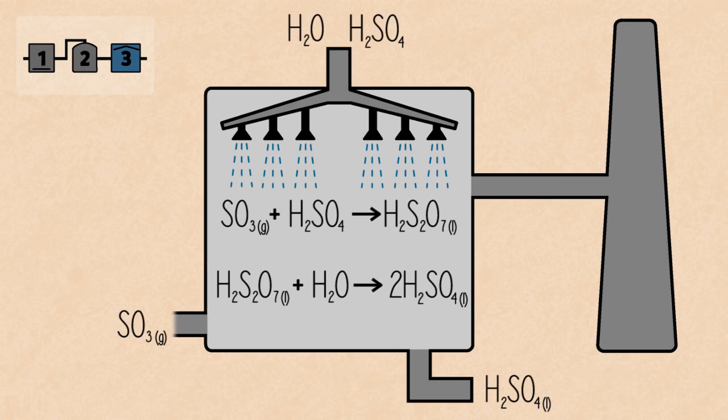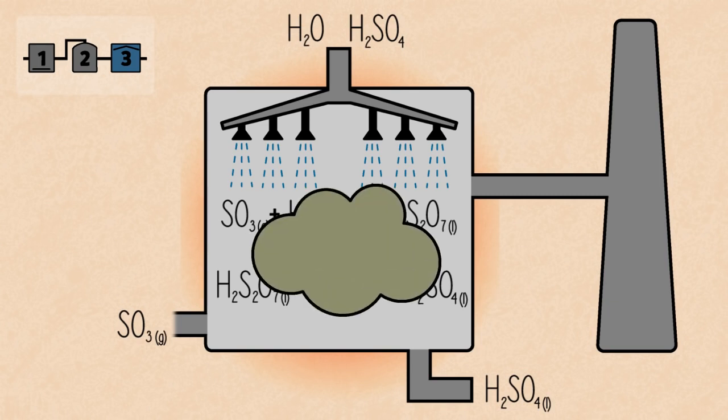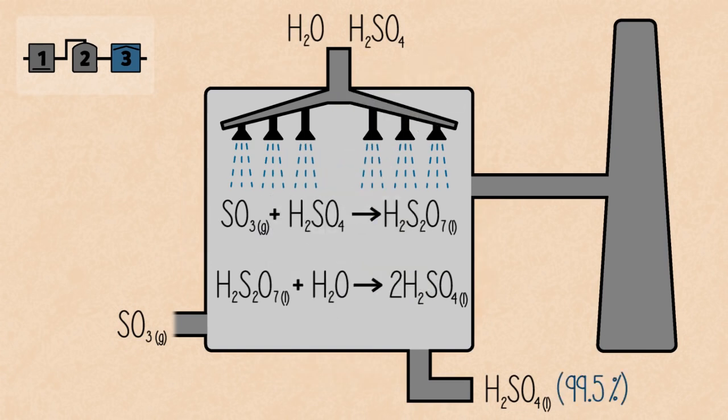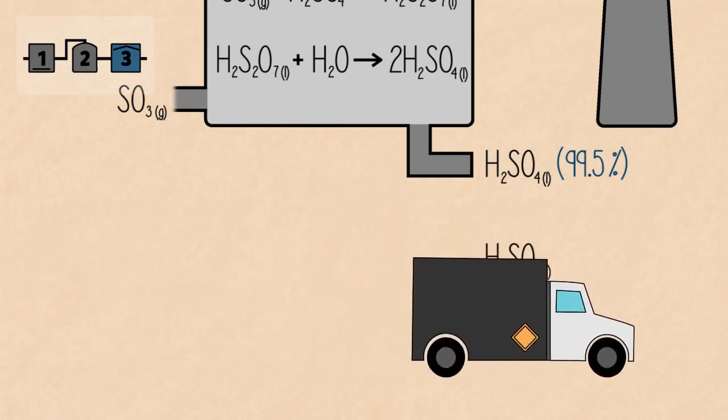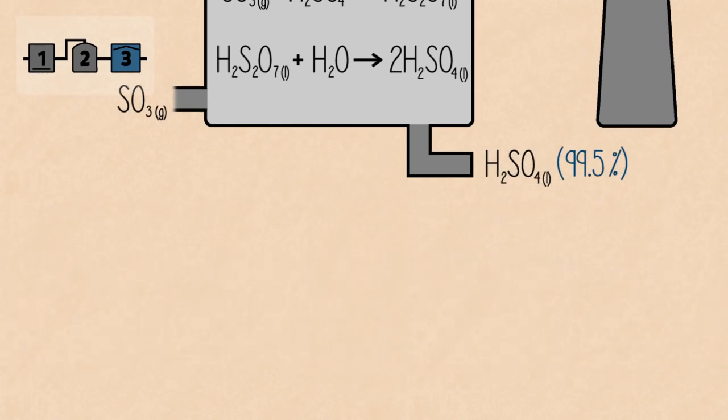This is because the reaction is very exothermic, so mixing it with pure water would release a mist of sulfuric acid that would escape into the air. 99.5% pure sulfuric acid is then collected and is shipped off to where it is needed next.